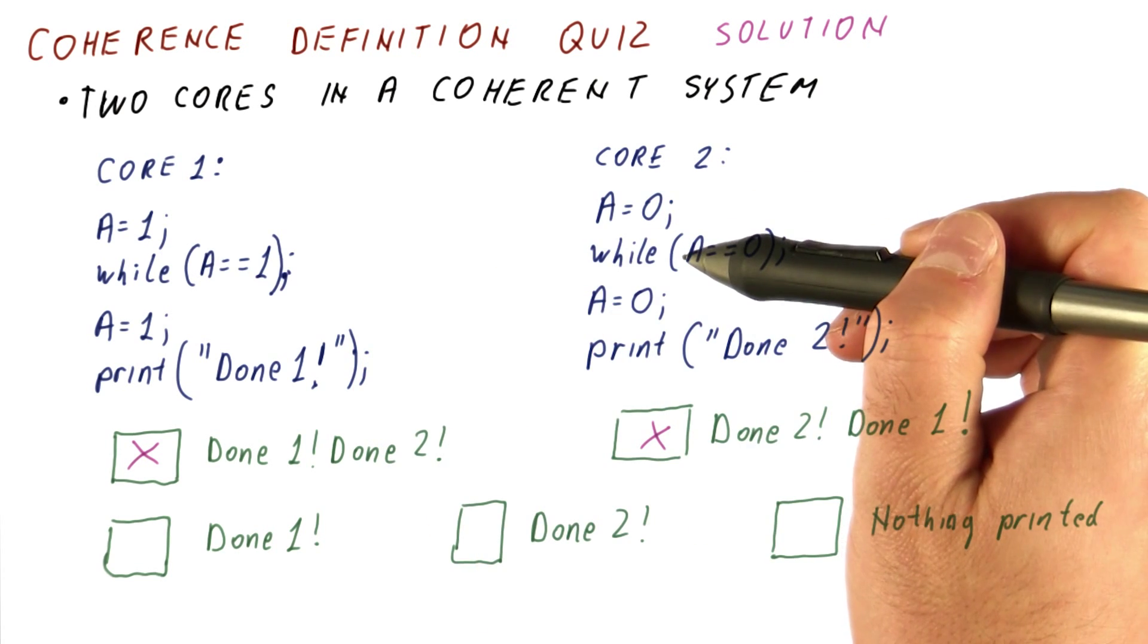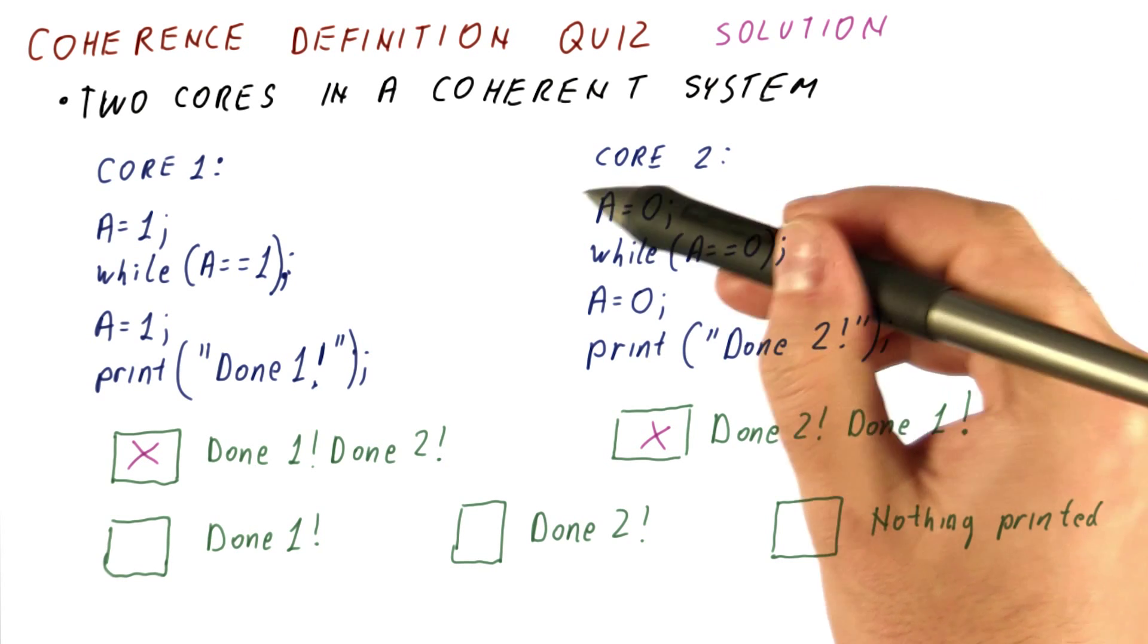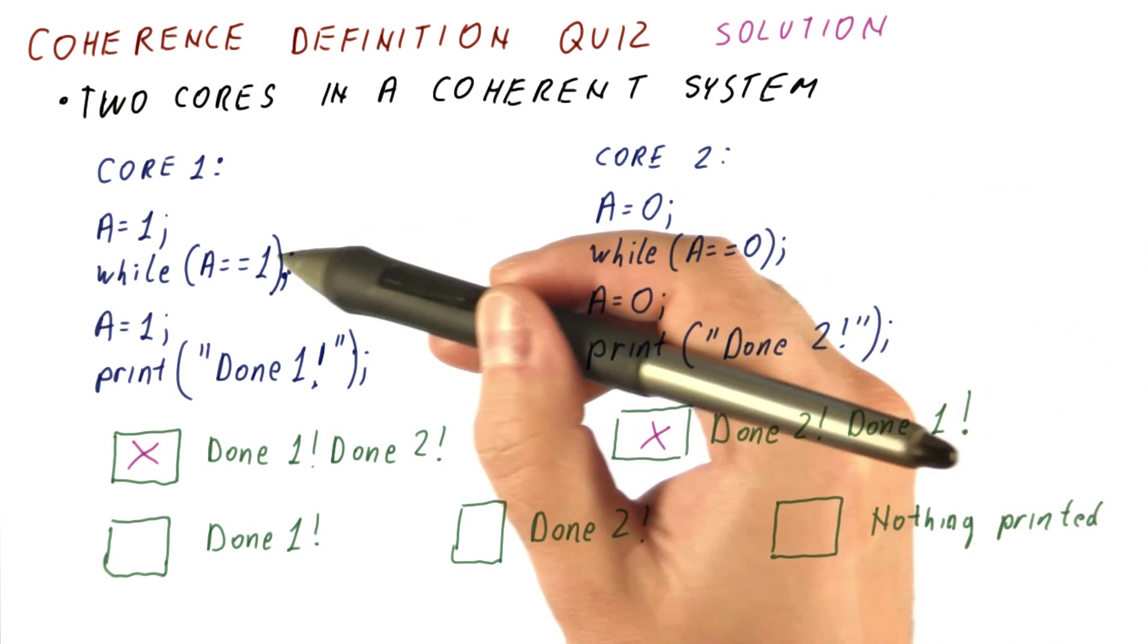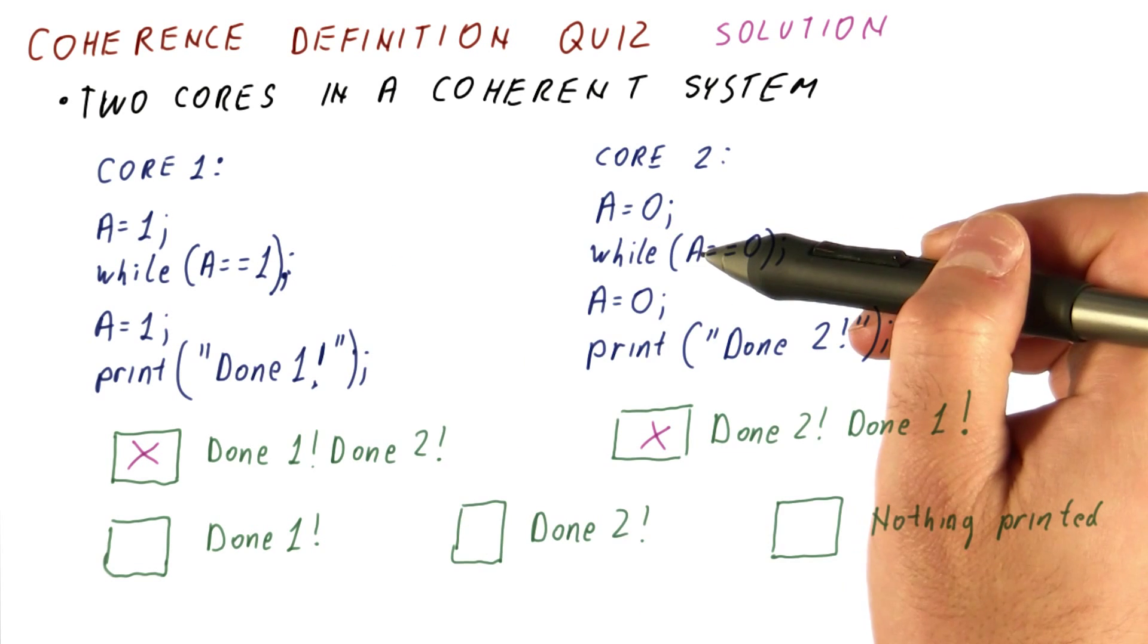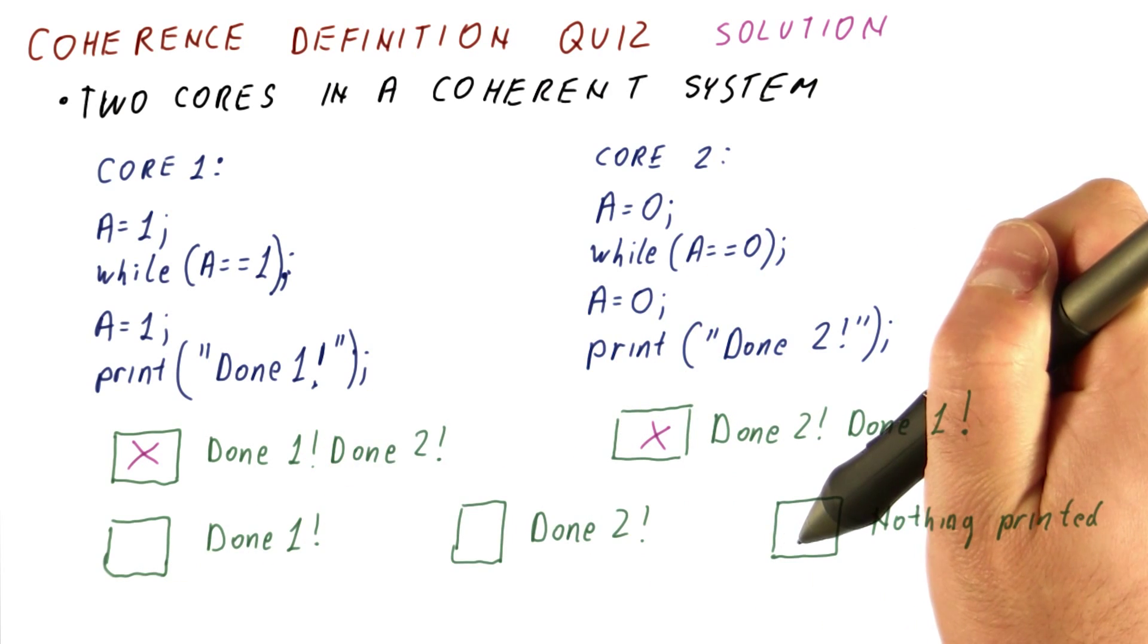So if they agree that this was the last one, then this core gets released, and then ends up releasing the first one. If they think this was the last access, then this core gets to be released, and releases the second one. So either way, it's not possible to get any of the three printouts.